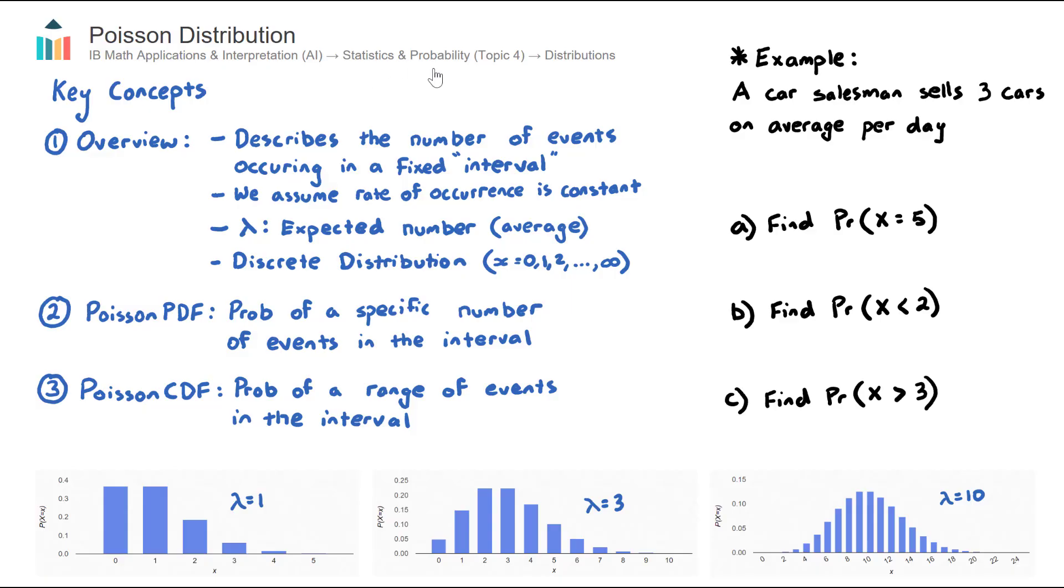AIHL students cover four types of distributions: Probability Distribution, Binomial Distribution, Normal Distribution, and now the fourth, Poisson Distribution.